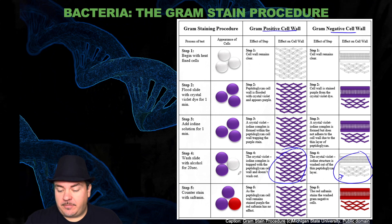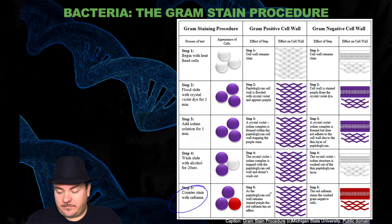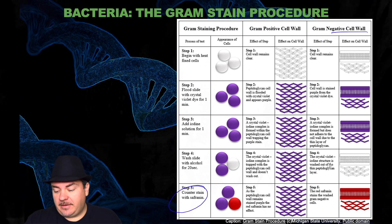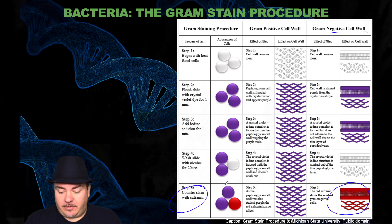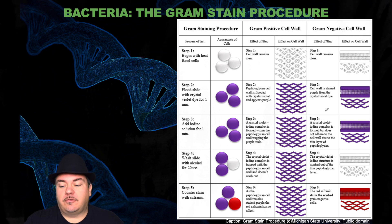When you wash the slide, in gram-positive cells the crystal violet–iodine complex is trapped within the thick peptidoglycan layer. In gram-negative cells, the crystal violet–iodine structure is washed out of the thin peptidoglycan layer, so gram-negative cells go from purple back to clear. Then you add a counter-stain, which gives gram-negative cells a pink or reddish color because it attaches to the peptidoglycan and outer membrane. This simple laboratory procedure lets you determine whether bacteria are gram-positive or gram-negative.